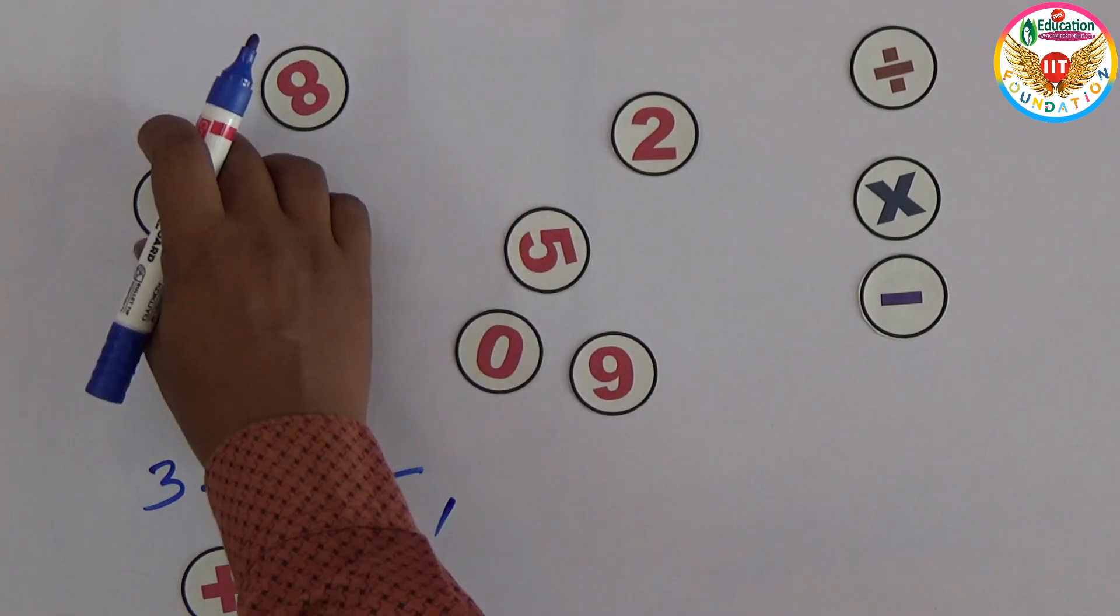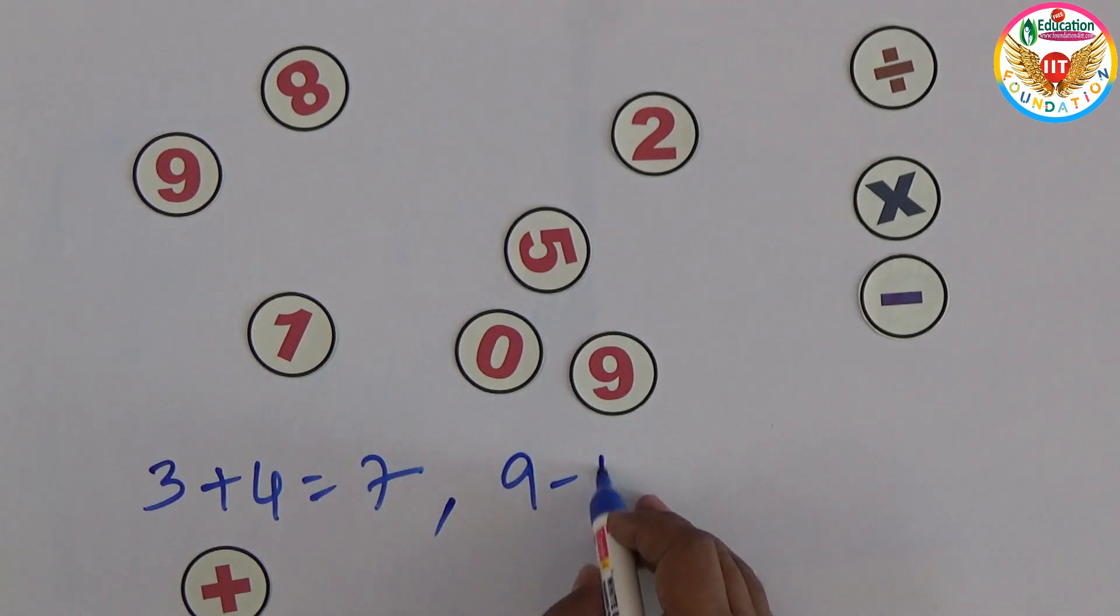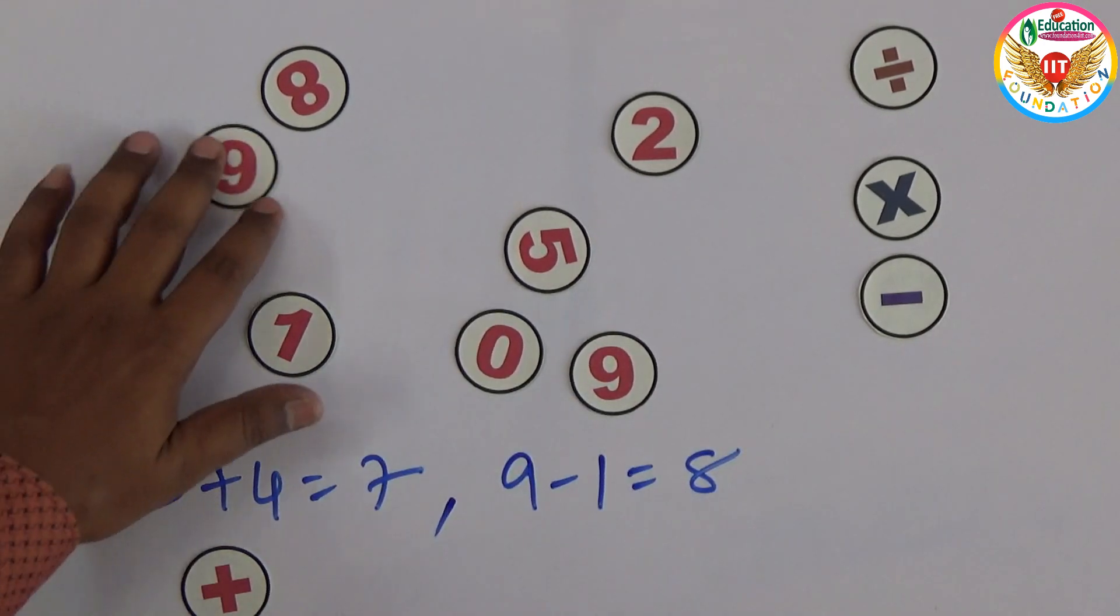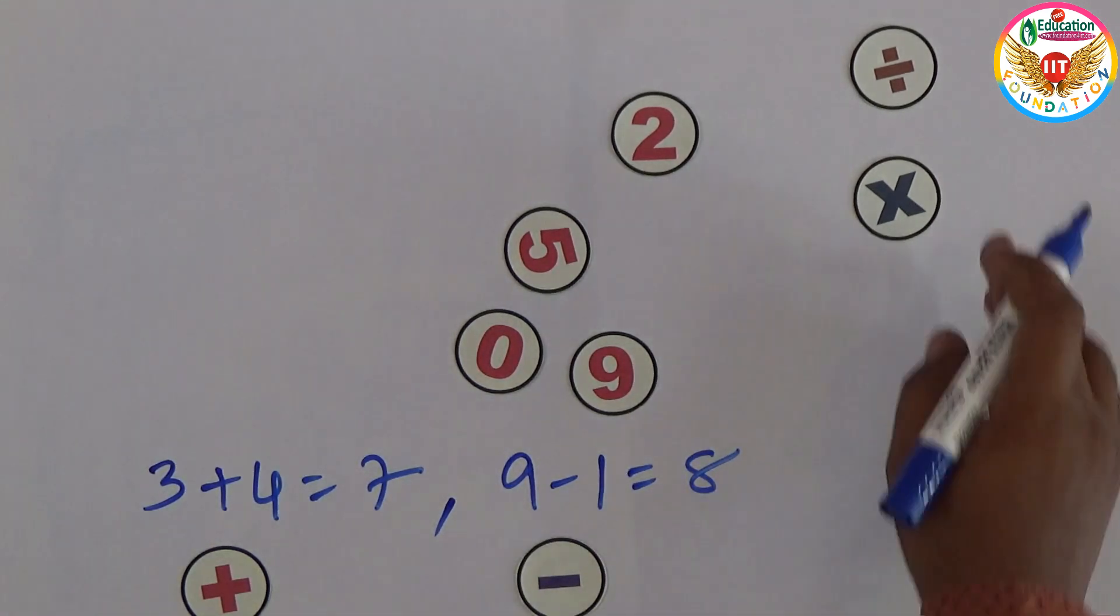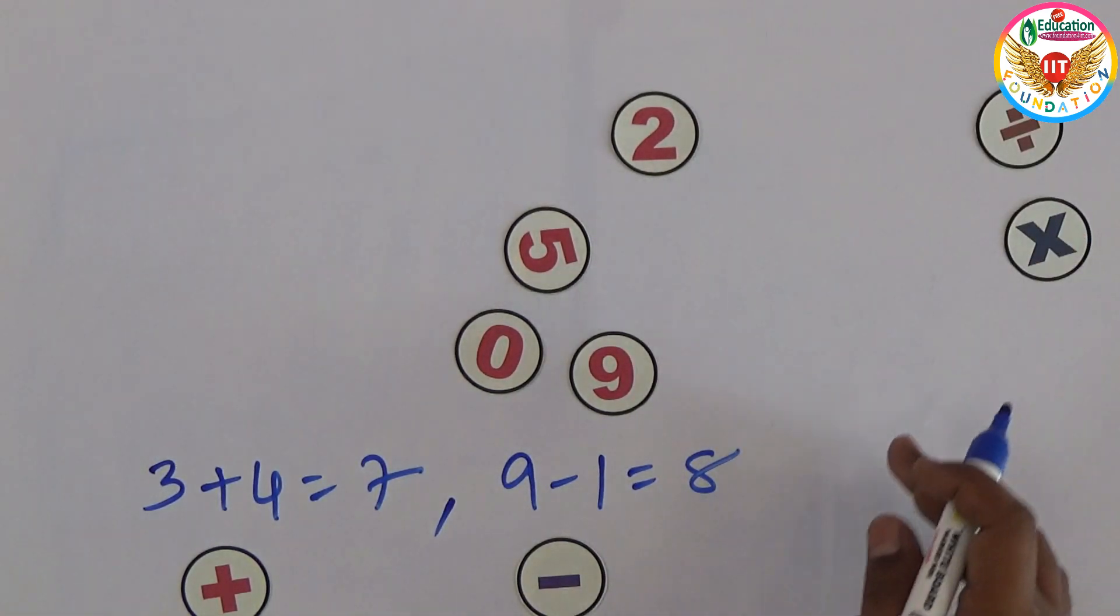Next, for example, 9 minus 1 equals 8. So 9, 1, 8, these three are removed. Now with that, division or... one more.